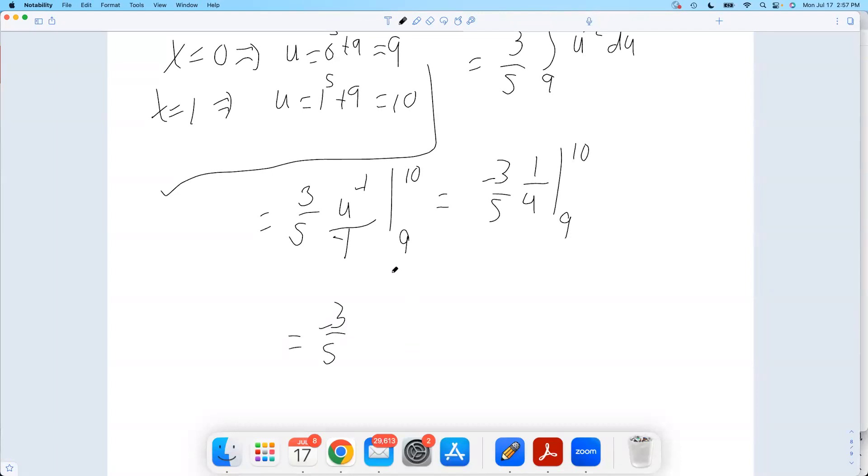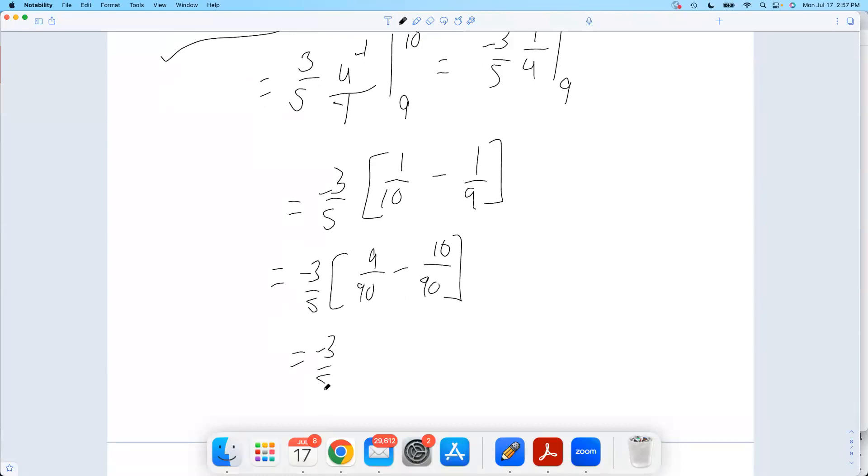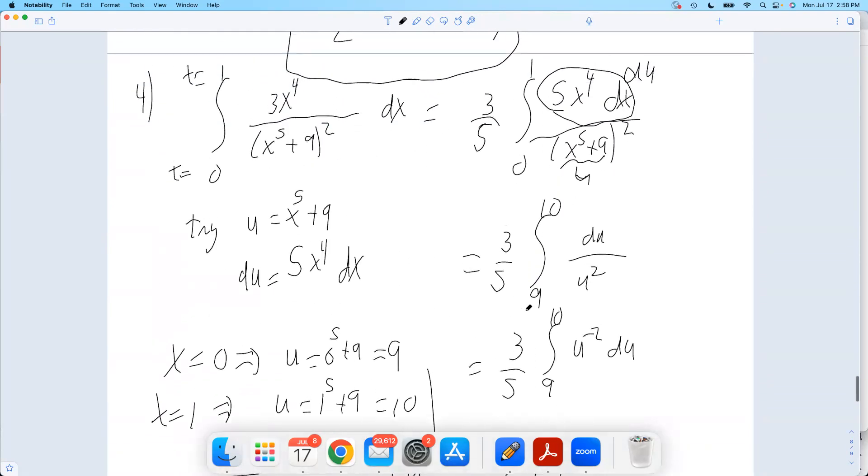That would be negative three fifths, one tenths, minus one ninth. Which, like, we'll go ahead and clean this up. My common denominator there would be 90. So this would be multiply top and bottom by nine, nine over 90. Multiply top and bottom by ten, ten over 90. So that's negative three fifths times negative one 90th. The negatives cancel. I think we can cancel a three here and get a 30 in the bottom. So I think five times 30, I think we get one over 150.